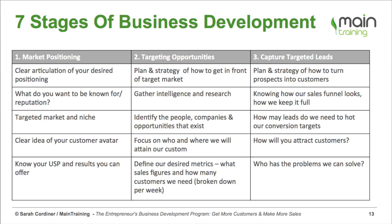Stage three is our capture targeted leads stage. This is when we actually fish up and collect our customers. We've figured out who they are — now we have a clear strategy of how we're going to turn those potential people into paying customers. This is where we really understand what our sales funnel looks like and how we're going to keep it full, so we have a constant stream of money coming into the business. We'll talk about how many leads we need to generate in order to convert those into sales.